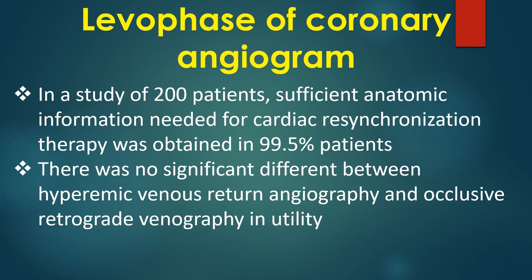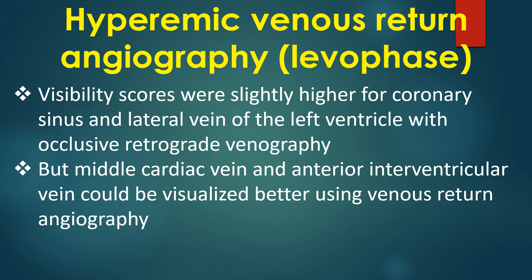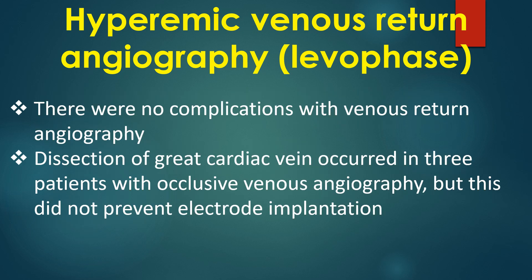There was no significant difference between hyperemic venous return angiography and occlusive retrograde venography in utility. Visibility scores were slightly higher for the coronary sinus and lateral vein of the left ventricle with occlusive retrograde venography, but the middle cardiac vein and anterior interventricular vein could be visualized better using venous return angiography. There were no complications with venous return angiography.